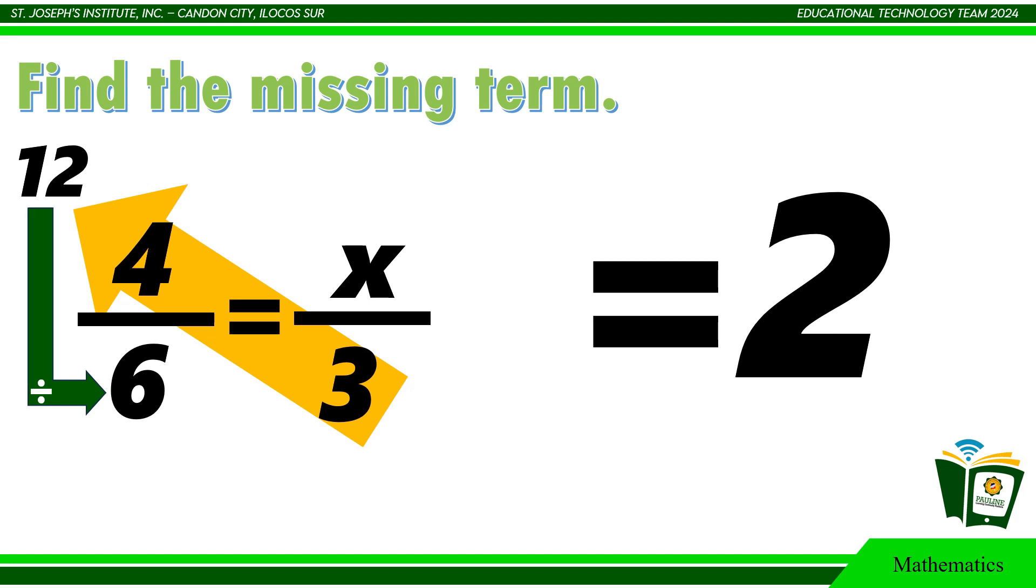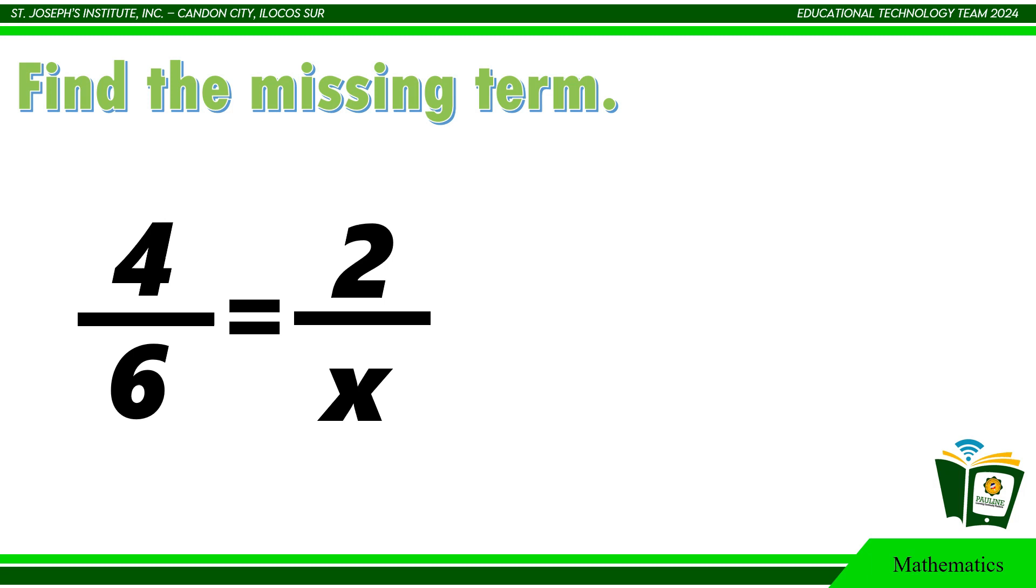Another method. 4 is to 6 equals 2 is to x. What is the value of x? In this method, you have to check the complete numerators or denominators. In our example, the complete terms are numerators. Check if they are related. As you can see, 4 can become 2 by dividing it by 2.